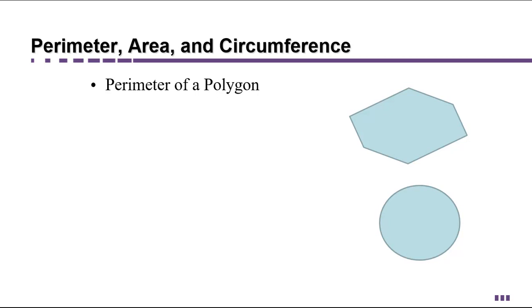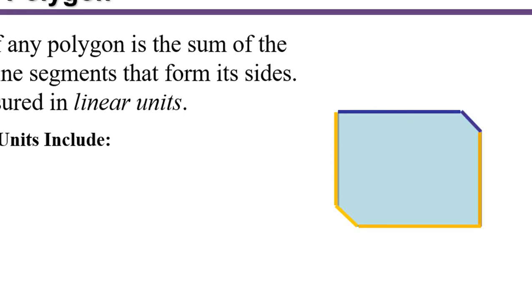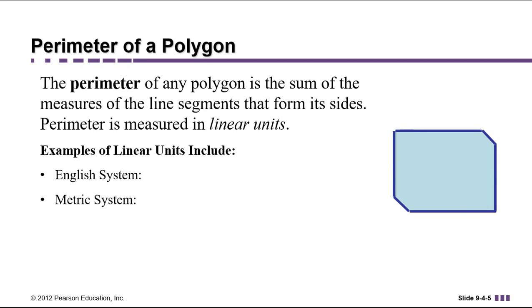In this video, we're going to talk about how to work with the perimeter of a polygon, the area of a polygon, the circumference of a circle, and the area of a circle. The perimeter of any polygon is the sum of the measures of the line segments that form its sides. Perimeter is always measured in linear units.